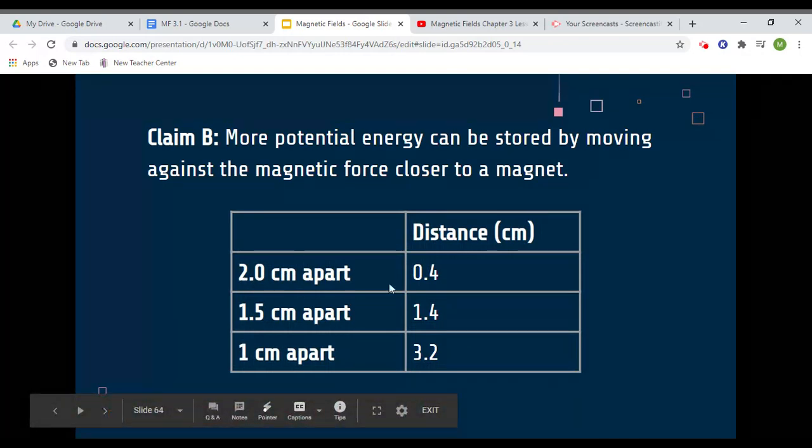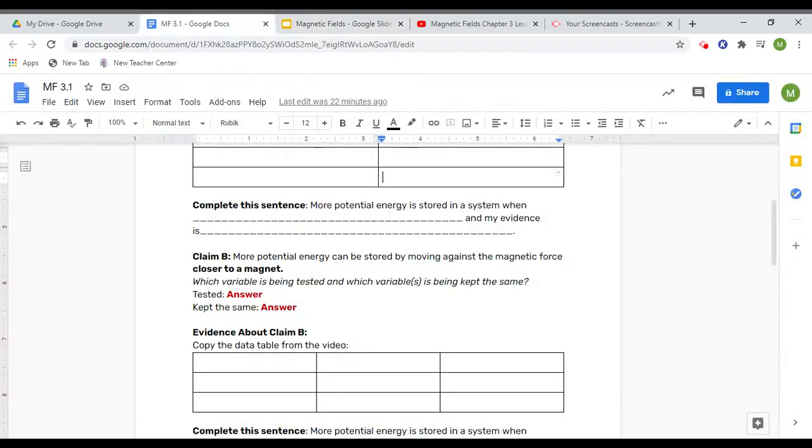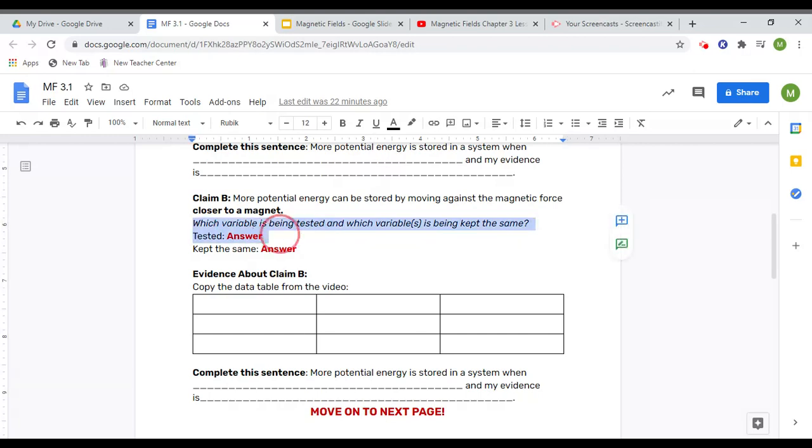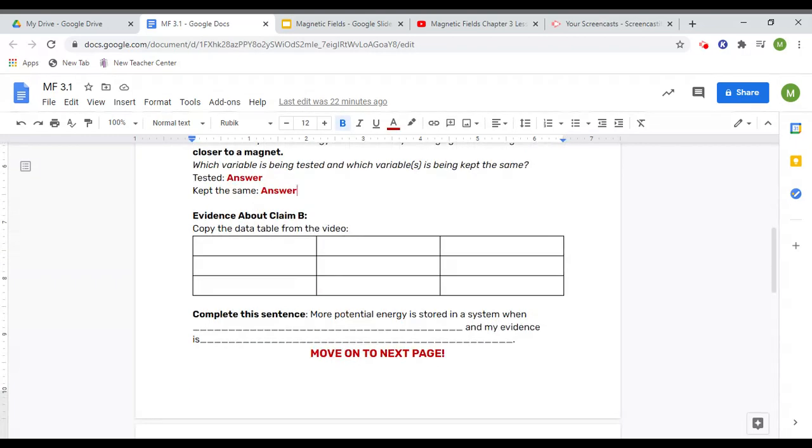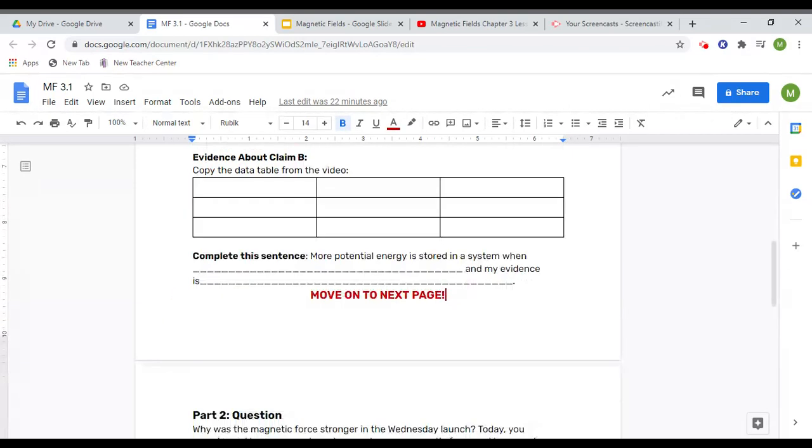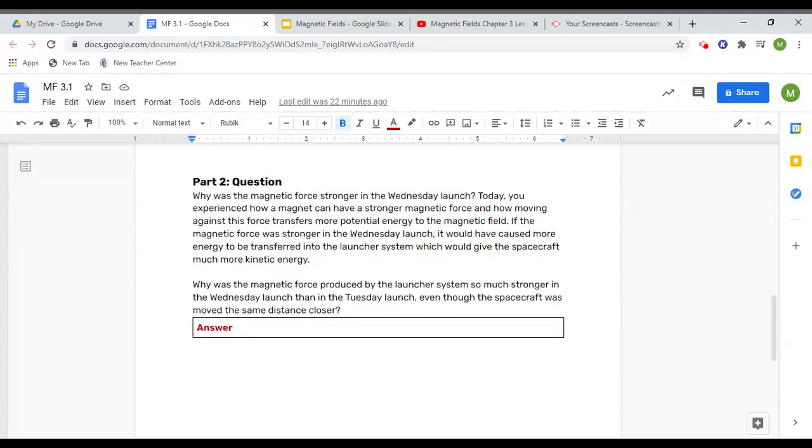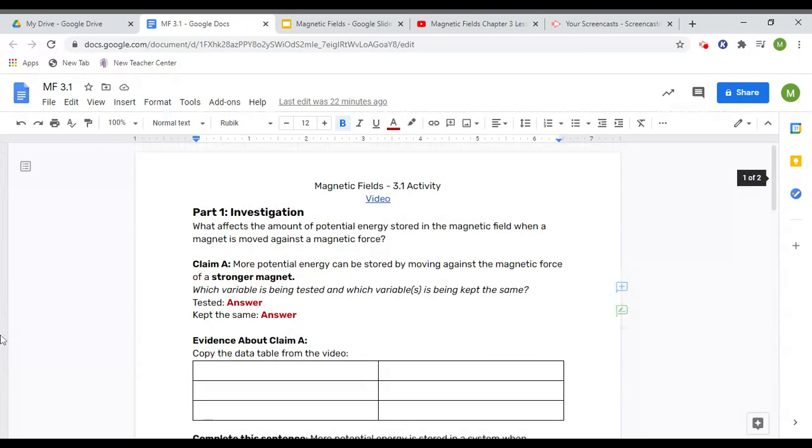This is when the magnets were 2 centimeters apart, 1.5, and 1 centimeter apart, and this is how far they went each time. You can write that right here. Again, which variable was tested there and which variables were kept the same. Complete the sentence here, just like Claim A. And then you have one question to do here to complete the lesson for today. That's it.